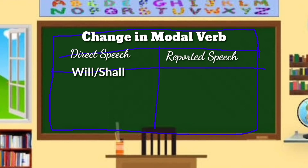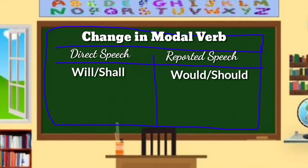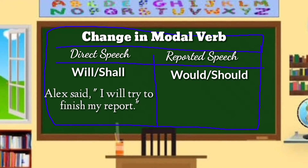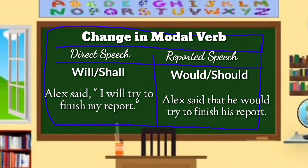Direct speech uses 'will' and 'shall,' while reported speech uses 'would' and 'should.' For example — DS: Alex said, 'I will try to finish my report.' RS: Alex said that he would try to finish his report. Take note of how modal verbs are changed from direct speech to reported speech — 'will' changes to 'would.'